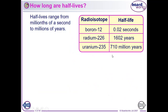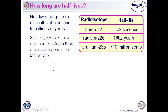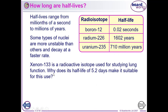Half-lives have a vast range. Boron-12 has a half-life of 0.02 seconds — it doesn't stick around for very long, it has a very high probability of decaying. Radium has a half-life of more than a thousand years. And uranium-235 has a half-life of 710 million years — you'll be dead before you've got anywhere near its first half-life. Xenon-133 is an isotope used for studying lungs in hospitals, and it has a half-life of 5.2 days.